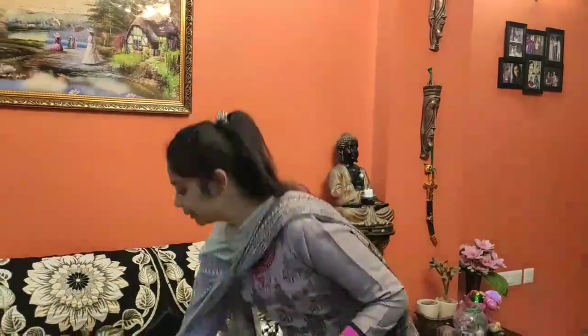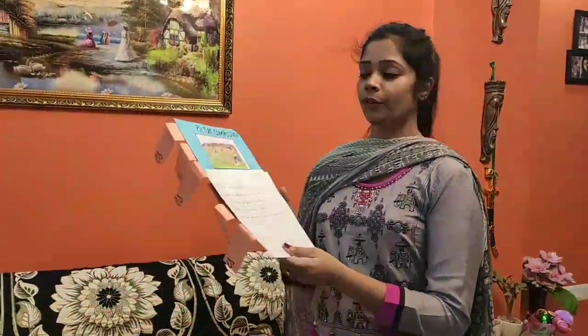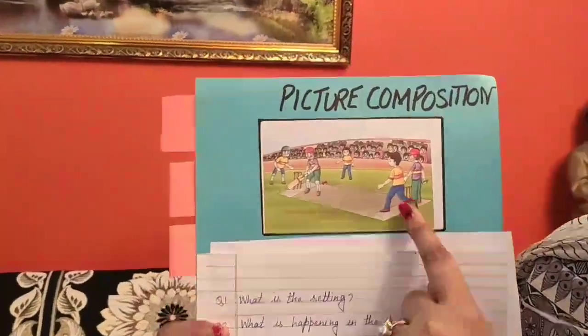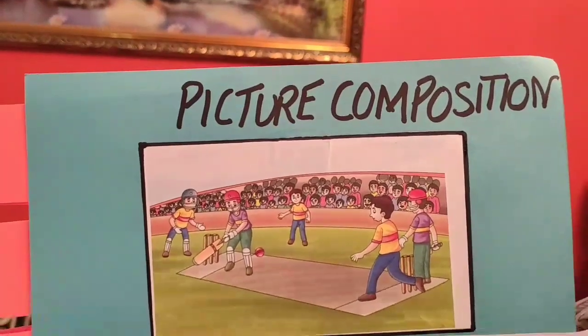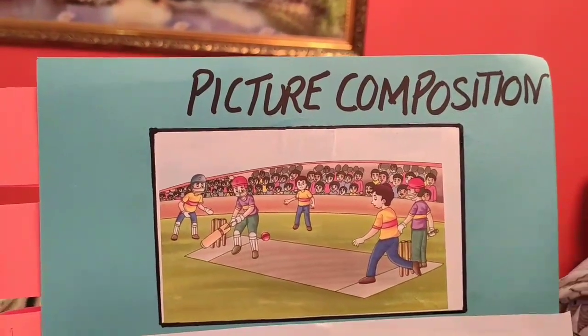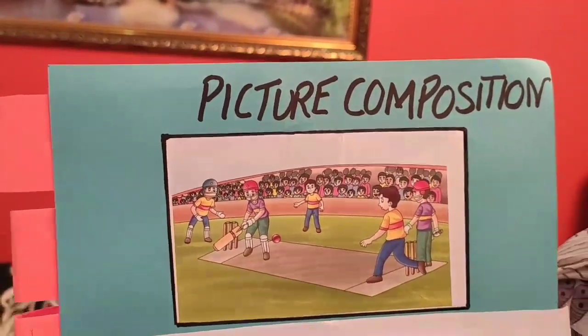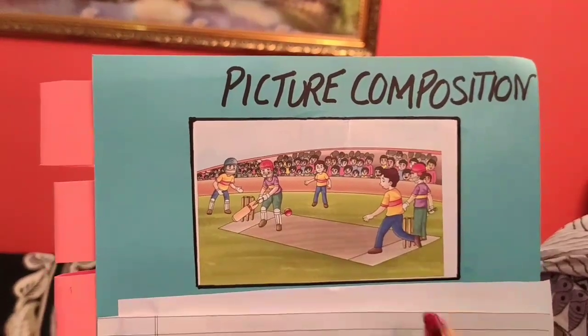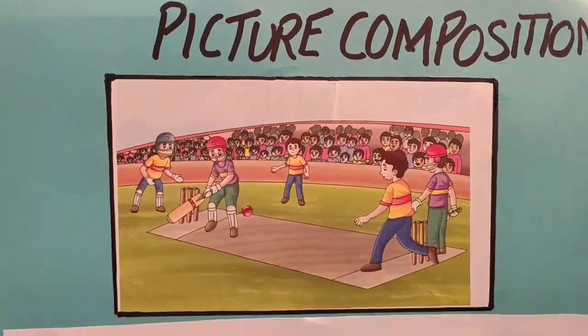For this we need to keep a few points in mind, as these points will help us to frame sentences very easily. Let's try to frame five sentences on this given picture. Our first step is to observe the picture very carefully. So observe this picture.